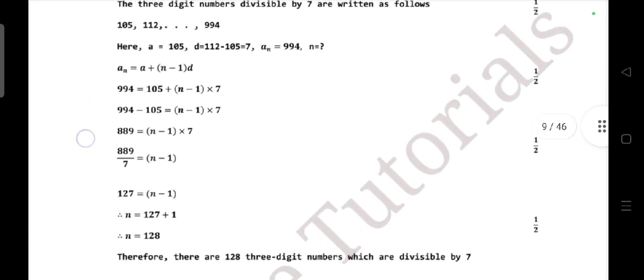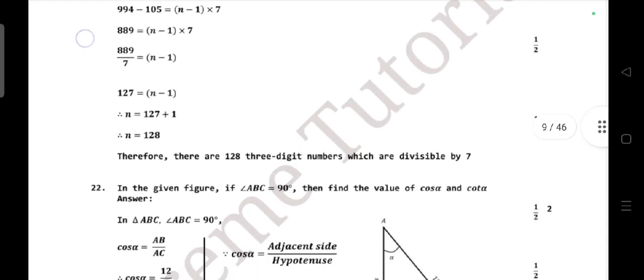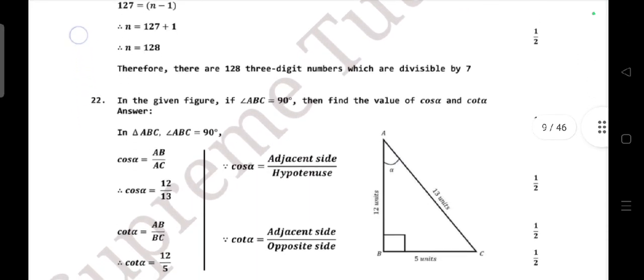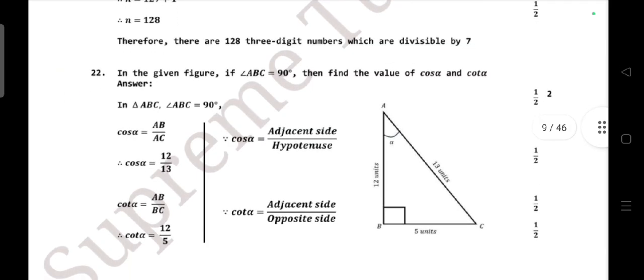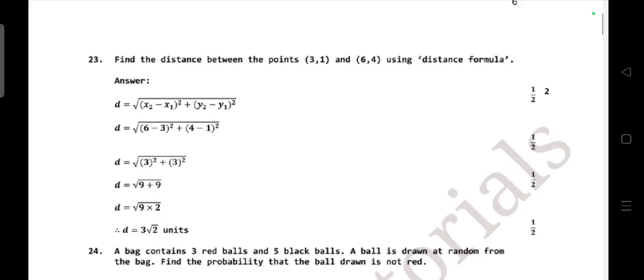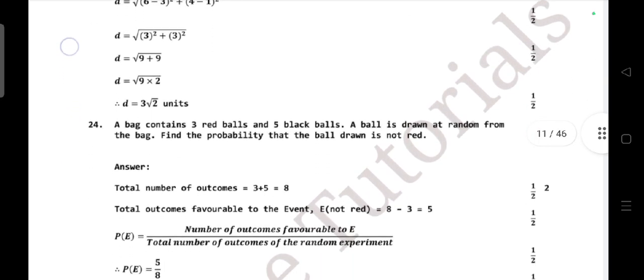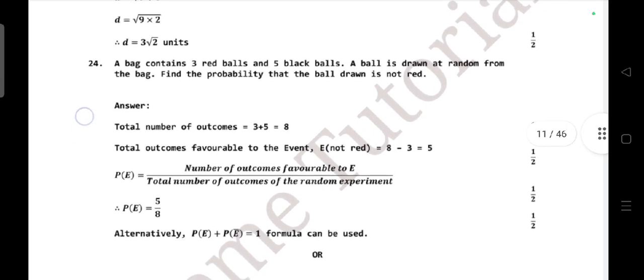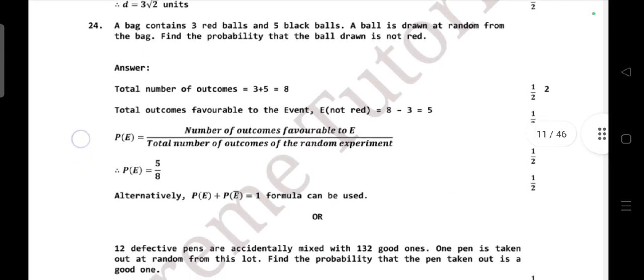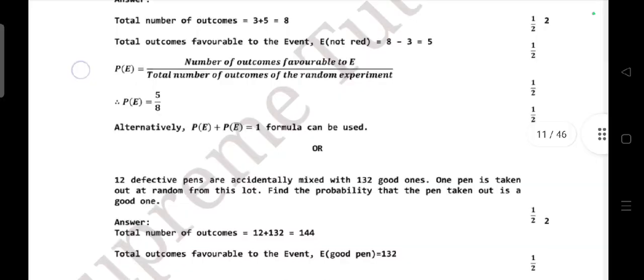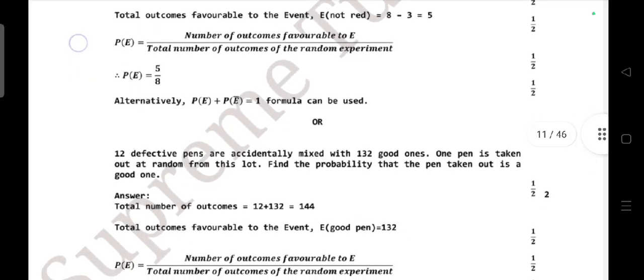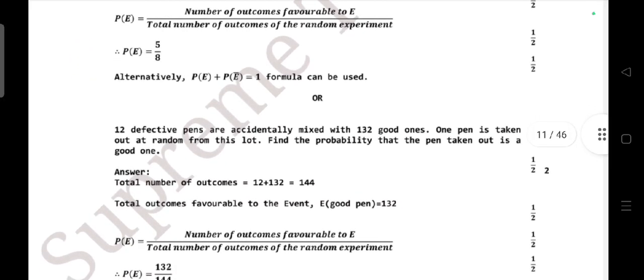Question number 22: in the given figure, if angle ABC is 90°, then find the value of cos α and cot α. Find the distance between the points (3,1) and (6,4) using the distance formula. If a bag contains three red balls and five black balls, a ball is drawn at random from the bag. Find the probability that the ball drawn is not red. Our question is also there: 12 defective pens are accidentally mixed with 132 good ones. One pen is taken out at random from the lot. Find the probability that a pen is taken out.